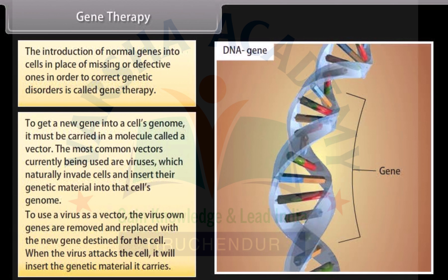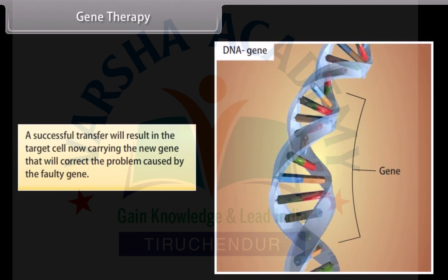To use a virus as a vector, the virus's own genes are removed and replaced with a new gene destined for the cell. When the virus attacks the cell, it will insert the genetic material it carries. A successful transfer will result in the target cell now carrying the new gene that will correct the problem caused by the faulty gene.